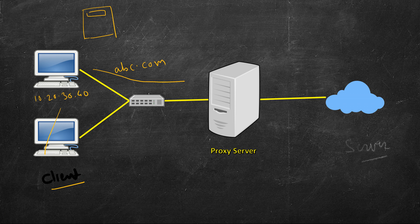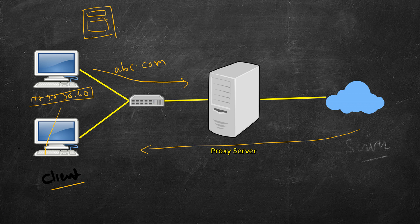In a setting where a proxy server is not there, the client will send a request and the information about the IP address of the originating machine is included. So anybody can know what a certain client is browsing. This request will go to the server and it will in turn send back the web page, which will be displayed on the client's machine.